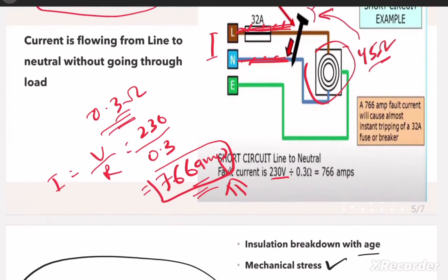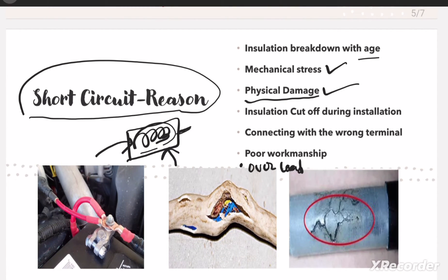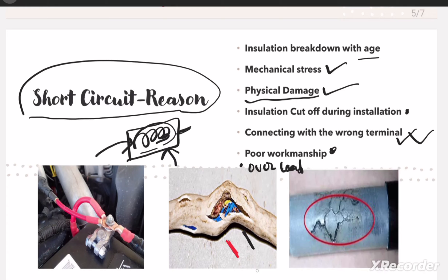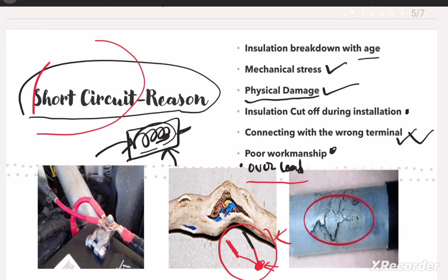Other reasons include poor workmanship during installation, where cable insulation is damaged. Another common reason is wrong connection — for example, if an electrician connects both a neutral wire and a phase wire to a single terminal point, it will cause a short circuit. Also, overload itself is an important reason: when equipment is overloaded for a long time, the insulation degrades rapidly, eventually leading to a short circuit condition.